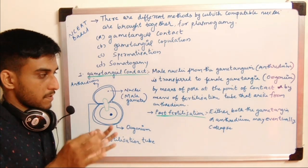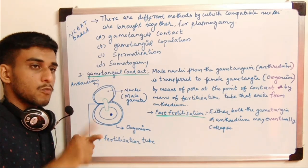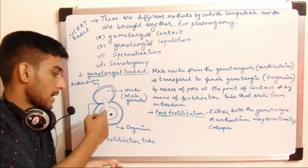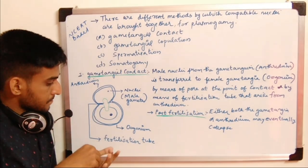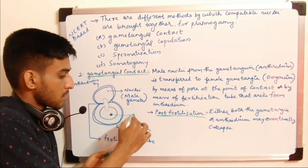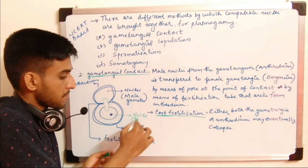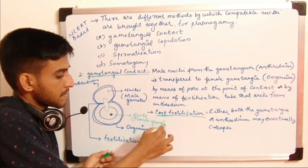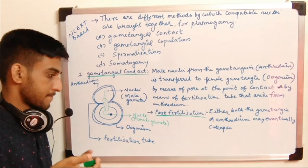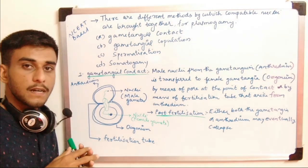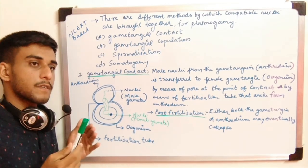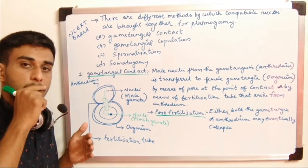The fertilization tube arises from the antheridium. After fertilization, the nuclei fuse in the egg cell — the female gamete. Post-fertilization: either the antheridium collapses and disintegrates, or both gametangia may disintegrate, leaving the fused zygote. The condition varies according to the fungi class.